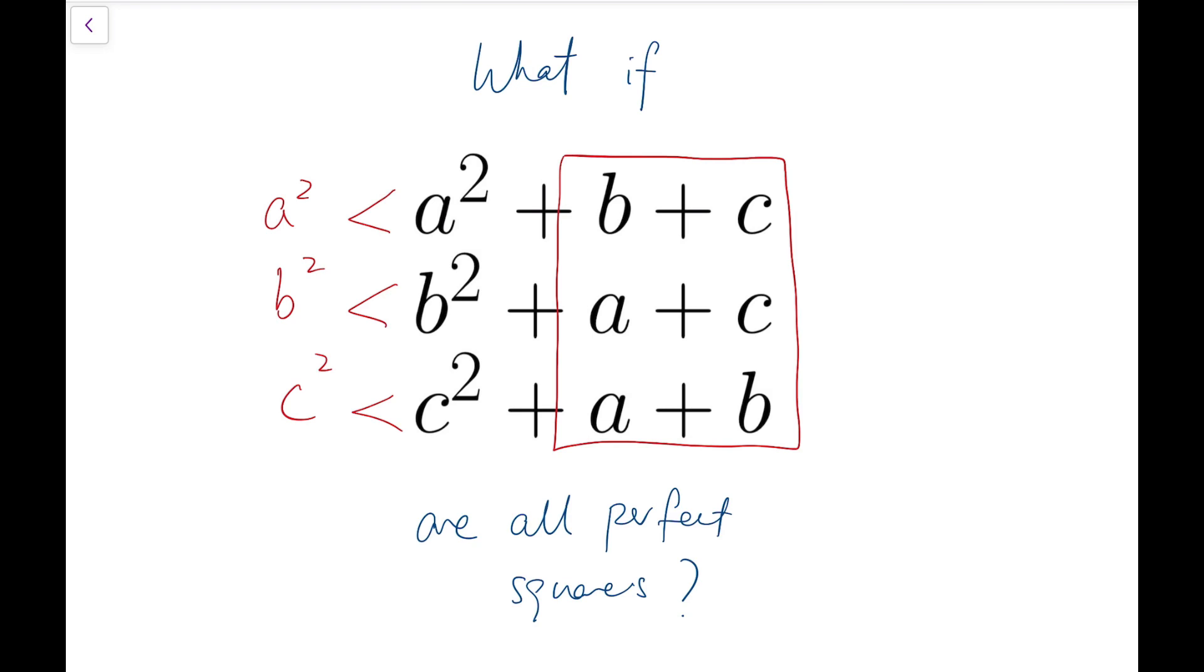Now, under our assumption, these numbers are all perfect squares, and they are greater than a squared, b squared, and c squared. So that means it must be at least, so I'm changing the signs, not a squared now, but the next perfect square, which is a plus 1 whole squared, b plus 1 whole squared, and c plus 1 whole squared.